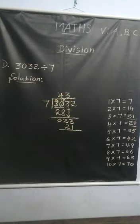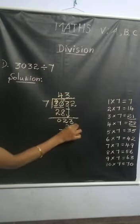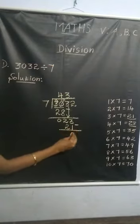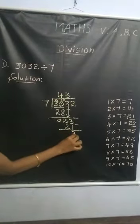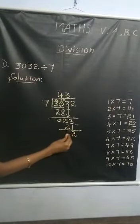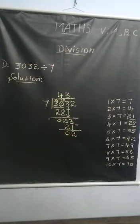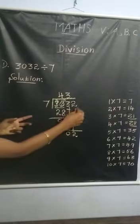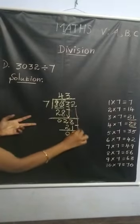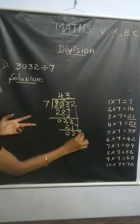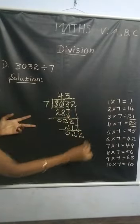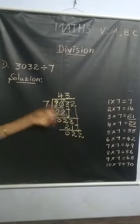What's the next step? Subtract. 3 minus 1 is 2. 2 minus 2 is 0. What's the next step? Bring down the number. Bring down 2.